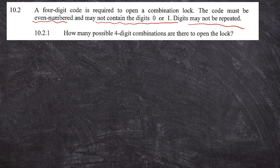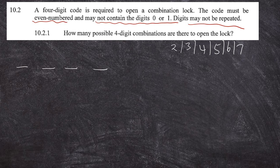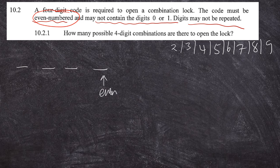I'm going to create four spaces here. Because zero or one cannot be used, we can only choose digits two, three, four, five, six, seven, eight, or nine. For the number to be even, the last digit must be an even number. So in the last position we can put two, four, six, or eight — that's four choices. Any number that ends with an even digit will always be an even number.